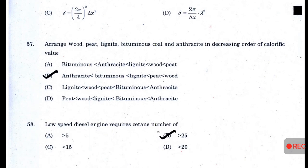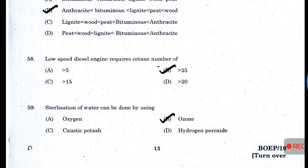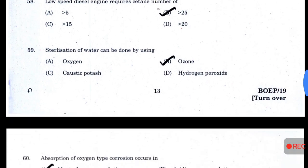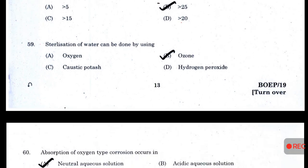Arrange wood, peat, lignite, bituminous coal, and anthracite in decreasing order of calorific value — answer B: anthracite, bituminous, lignite, peat, and wood. Low-speed diesel engine requires cetane number of 25. Sterilization of water can be done by using — answer B — ozone.